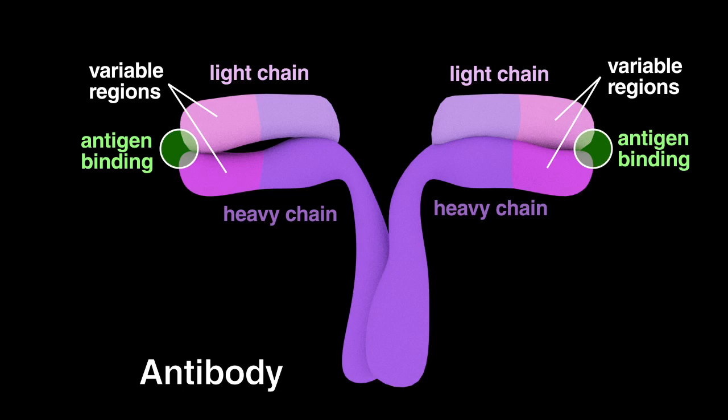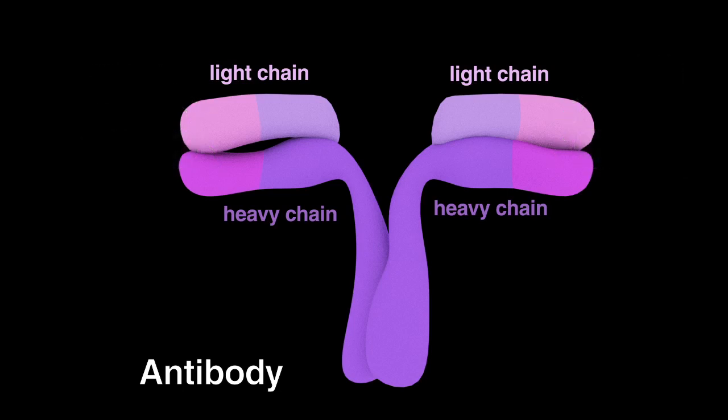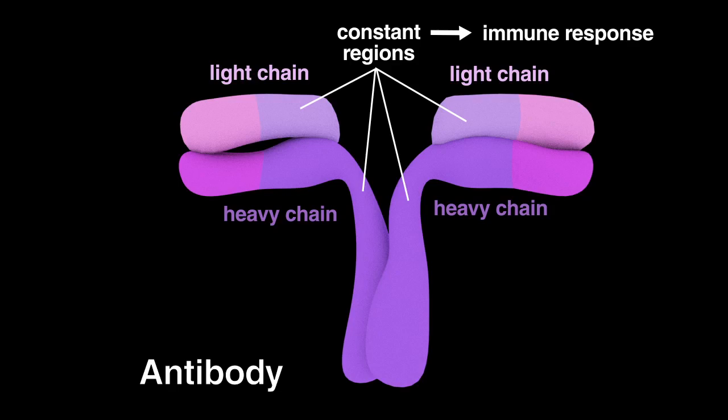Variable regions are involved in antigen binding. The other regions of the polypeptide chains vary very little in sequence among different antibodies from the same species and are called constant regions. The constant regions are responsible for interacting with effector proteins that mediate the immune response.